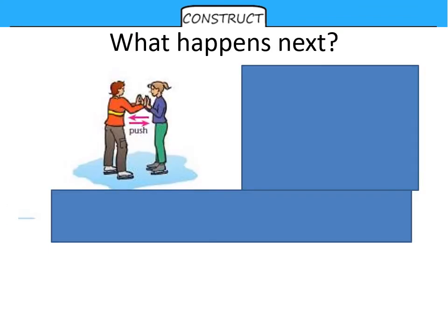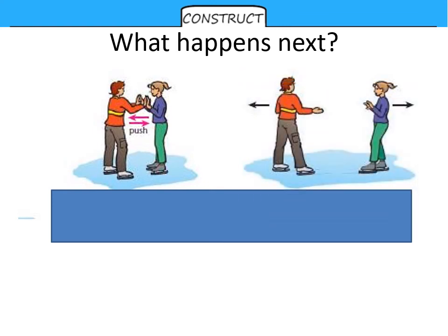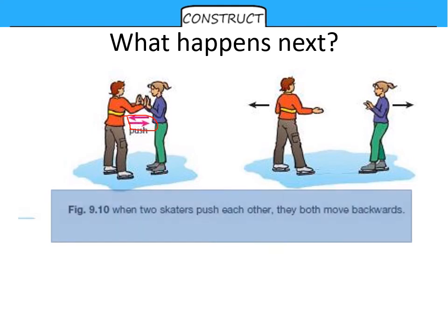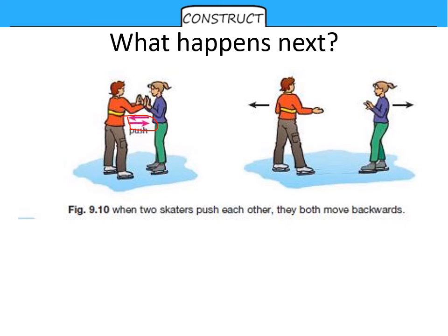And one final example. A pair of skaters on the ice. What happens if one pushes the other? Well, both skaters will move in opposite directions. The force applied as they push is equal in size and opposite in direction, and that causes one to move to the left and the other to move to the right. The heavier skater will move with the smallest speed or velocity.